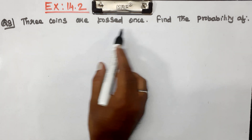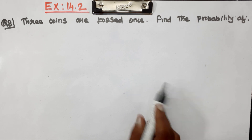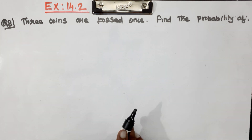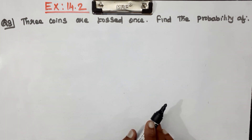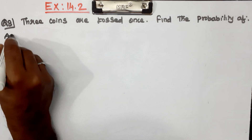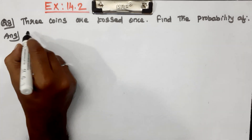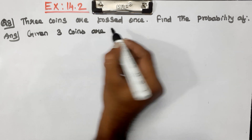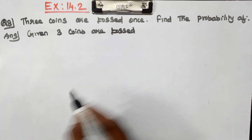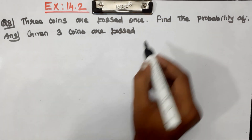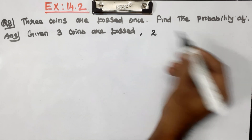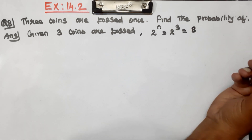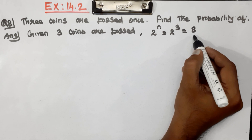Three coins are tossed once. This is the sample space. One coin has two faces. For N number of tosses, the sample space is 2 power 3, which equals 8. So this sample space has 8 values.